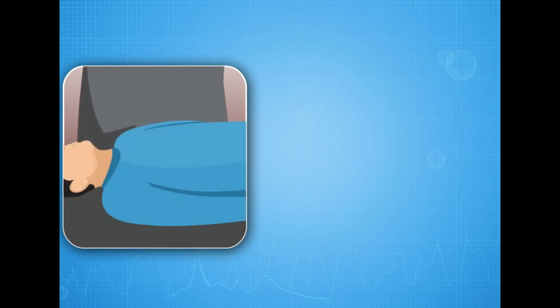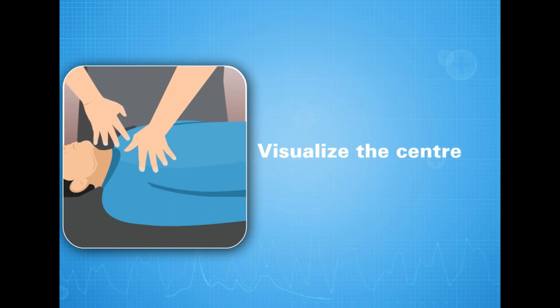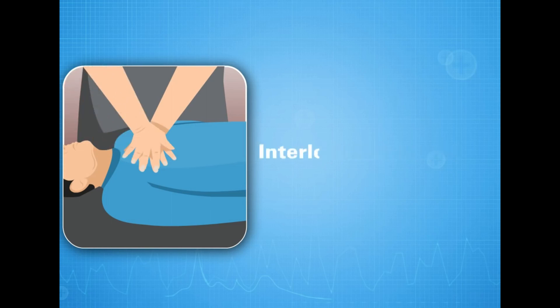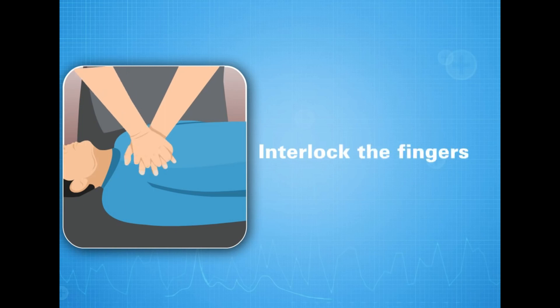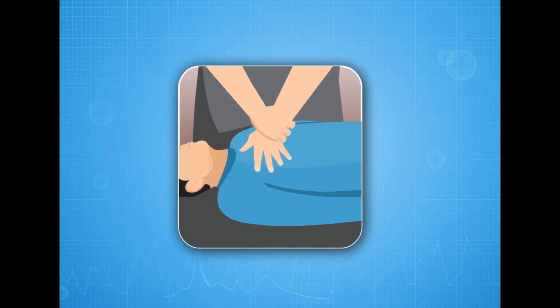Position yourself in a way that will allow you to apply vertical pressure during compressions. Visualize the center of the casualty's chest and place the palm of one hand on that point. Place the other palm on top of the first and interlock the fingers. Alternatively, you can grasp around the wrist of the first hand — either method is acceptable.